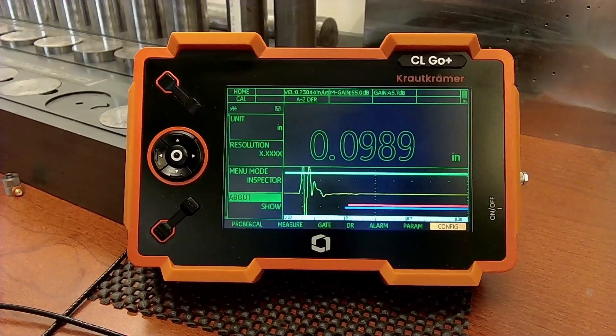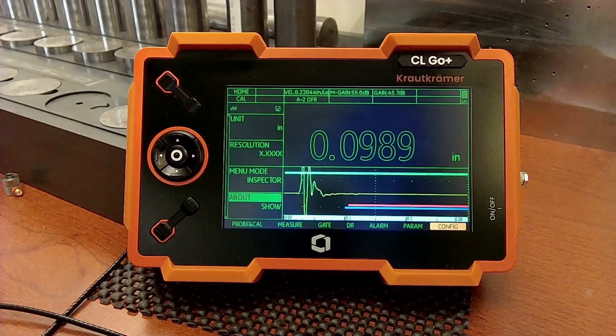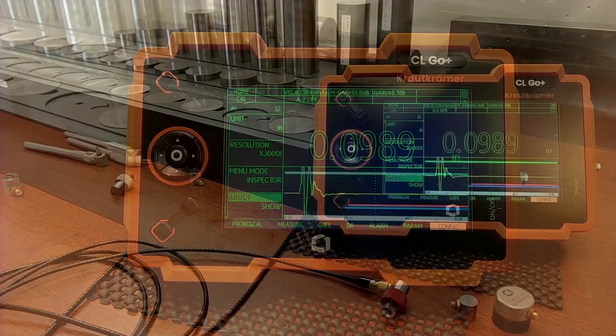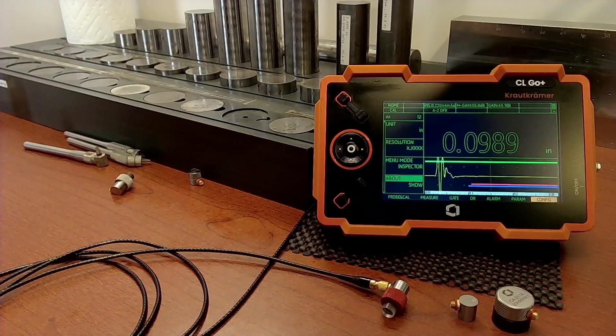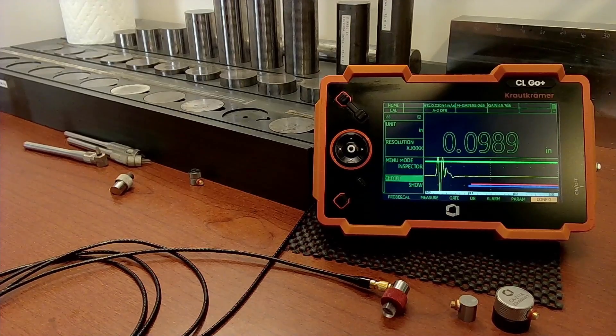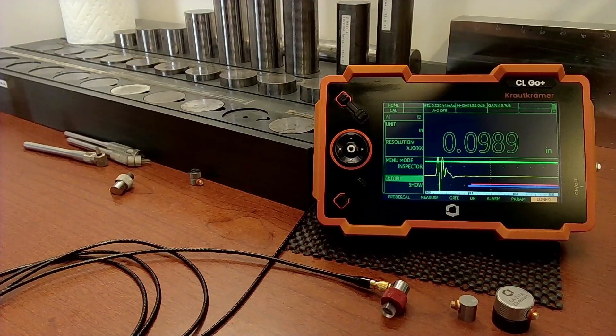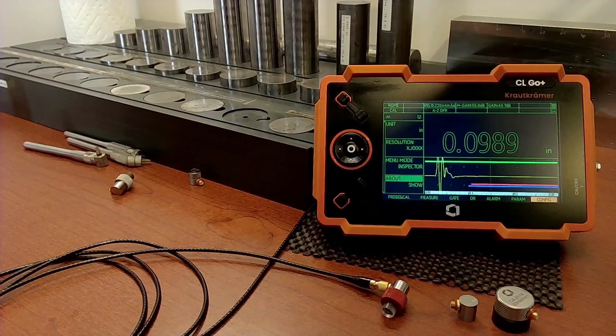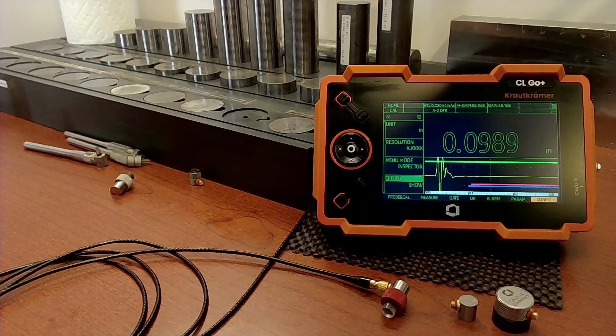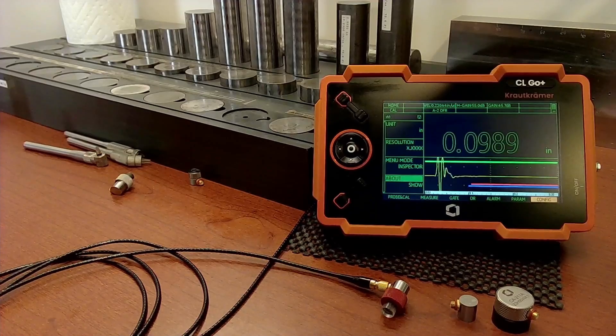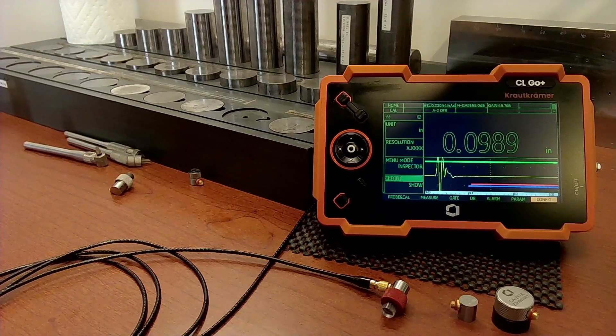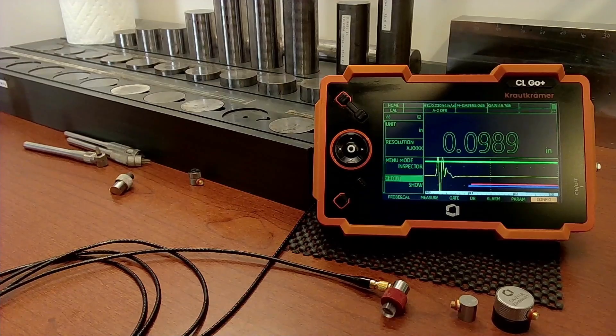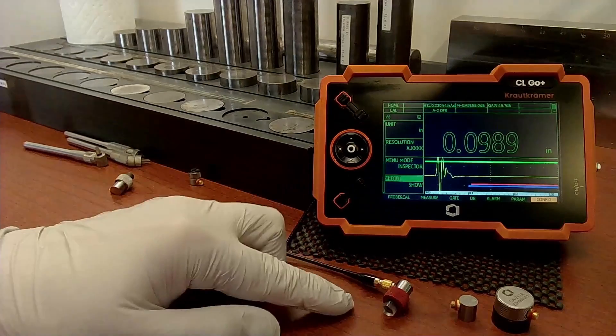That was a culmination of many years of development in precision measurement. Unfortunately due to component obsolescence, we had ended production of CL-5. When it came time to design the replacement for the CL-5, we decided to grow our existing GO-PLUS instrument platform that has been so successful for us in flaw detection and corrosion thickness gauging and add the additional measurement modes needed to do precision measurements.